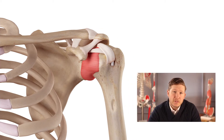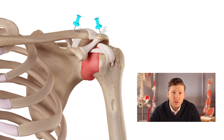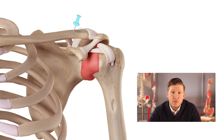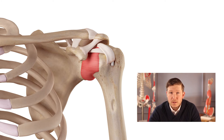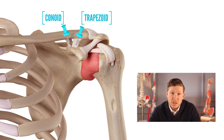Let's look at the ligaments. First we have the acromioclavicular ligament, which extends from the acromion to the clavicle. The majority of the integrity of the AC joint is not resulting from this ligament but rather from another ligament that extends from the clavicle to the coracoid process. This is the coracoclavicular ligament, comprised of two parts called the conoid and trapezoid, which you can see here.